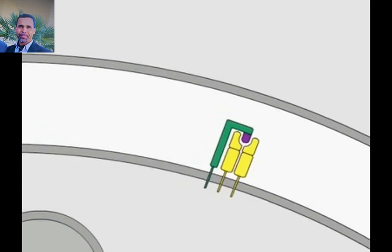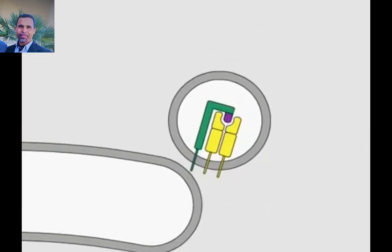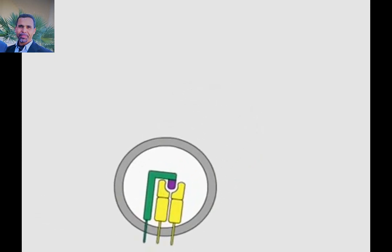The invariant chain also guides the transport of the class 2 molecule out of the ER and through the Golgi apparatus into a vesicle that eventually becomes part of the endocytic pathway by which pathogens and foreign proteins are taken into the cell.